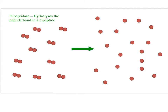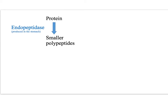The last enzyme in the step is dipeptidase. These hydrolyse the peptide bonds in the dipeptides, splitting each dipeptide into individual amino acids, which are now small enough to be absorbed into the blood. Here is a flow diagram going through the digestion of proteins into smaller polypeptides using the endopeptidase enzyme.